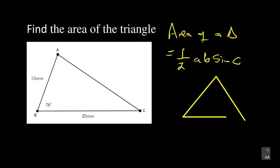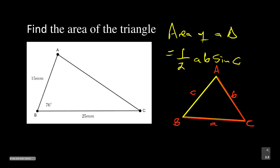You'll have a triangle with vertices A, B, and C. The sides opposite to these vertices are small a, small b, and small c respectively. So if the area of a triangle is half AB sine C, you can see side A and side B here. Look at the angle formed by these two lines — they form angle C. So this formula is correct.